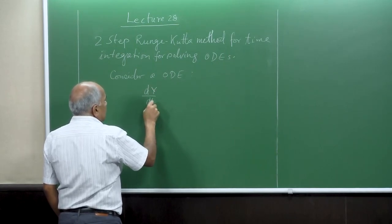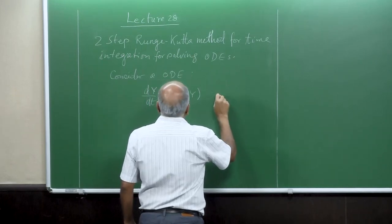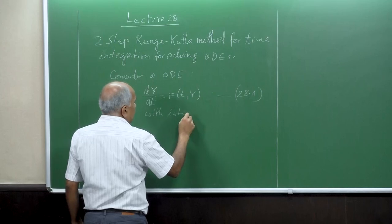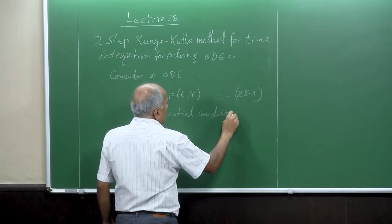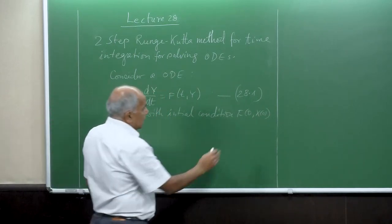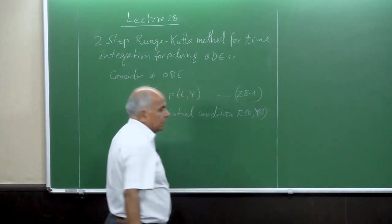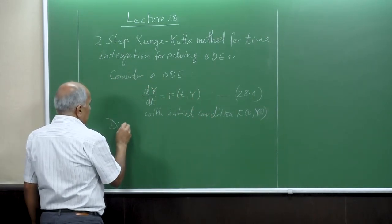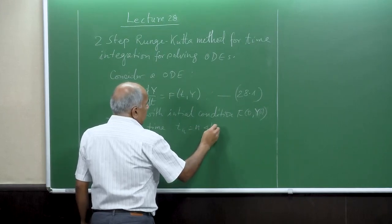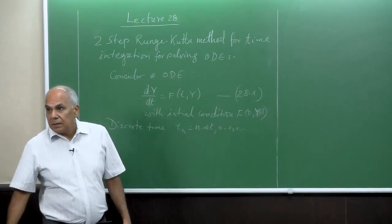Therefore we need to concentrate on integrating the ODE system. Consider an ODE: dy/dt = f(t, y), with initial condition y(0) = f_0(x). The discrete time is t_n = n * delta_t, where n goes from 0 up to the total number of integration time steps.